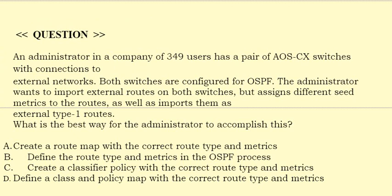Next question: An administrator in a company of 349 users has a pair of AOS CX switches with connections to external networks. Both switches are configured for OSPF. The administrator wants to import external routes on both switches but assigns different seed metrics to the routes, as well as imports them as external type 1 routes. What is the best way for the administrator to accomplish this? Option A: Create a route map with the correct route type and metrics. Option B: Define the route type and metrics in the OSPF process.